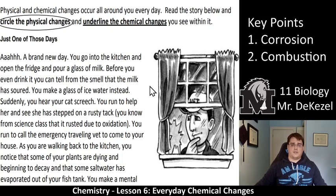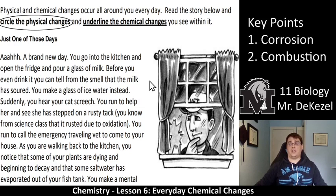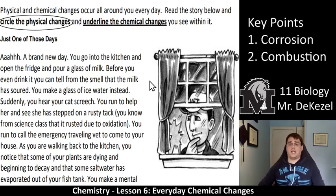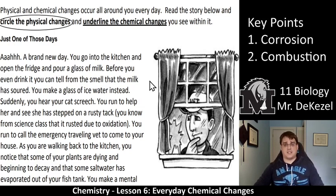What we're going to do now is go through a story. I want you to circle the physical changes and underline the chemical changes. Pay attention, because after this you're going to write your own story. Now that we've learned about physical and chemical changes, as well as some that happen around you, try to be more aware of the different changes that occur around you every single day. Let's get into the story.